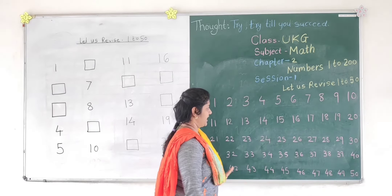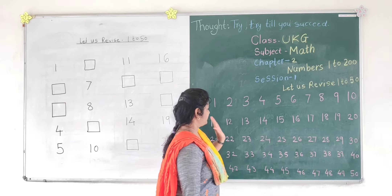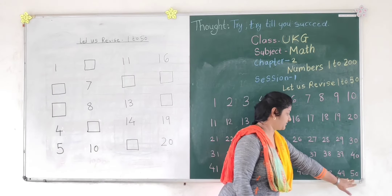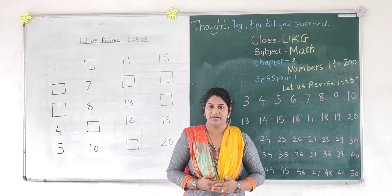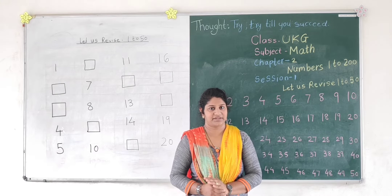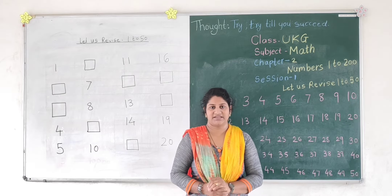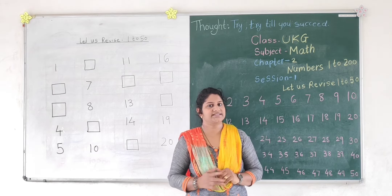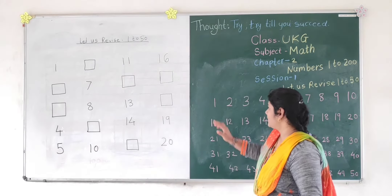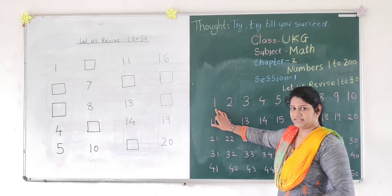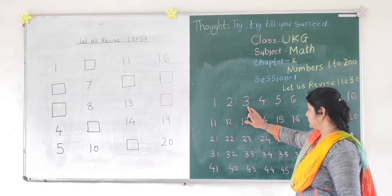Let us revise 1 to 50. Here I have written 1 to 50 numbers. You have learnt 1 to 50 numbers in the last class. Yes, so let us revise 1 to 50.